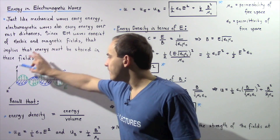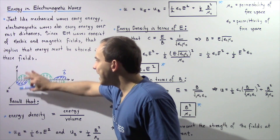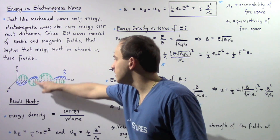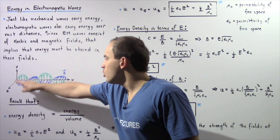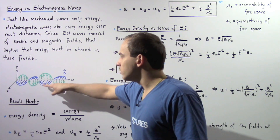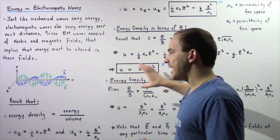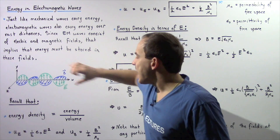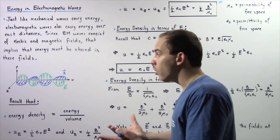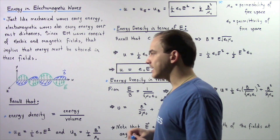Consider the following electromagnetic wave: the wave is traveling along the x-axis, the electric field shown in green is changing along the y-axis, while the magnetic field shown in blue is changing along the z-axis. The wave is propagating through empty space in the positive x-direction, and all the energy is stored within these electric and magnetic fields.